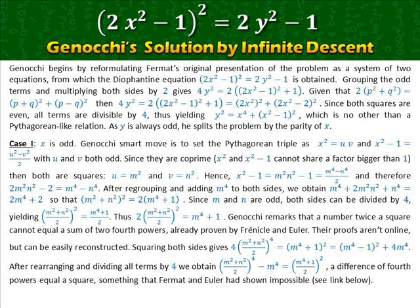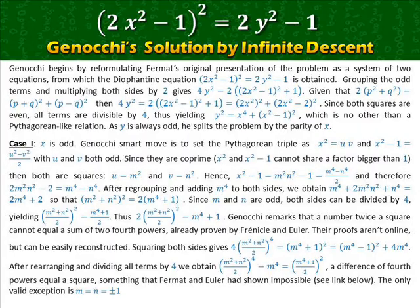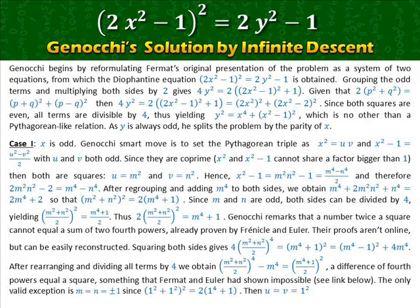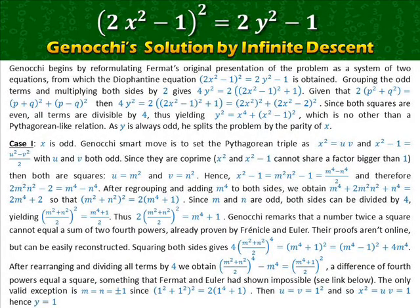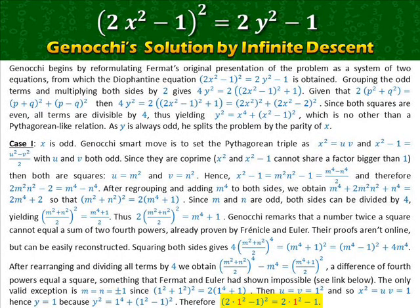This is something that Fermat and Euler had shown to be impossible. The only valid exception is when m = n = ±1, since (1² + 1²)² = 2·1⁴ + 1. Then u = v = 1² and so x² = 1, hence y = 1, because y² = 1⁴ + (1² − 1)² = 1. Therefore the Diophantine equation has the solution x = 1 and y = 1.